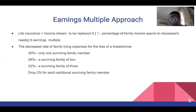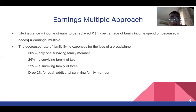The data shows: for loss of the breadwinner, 30% is for only one surviving family member, 26% is for a surviving family of two, 22% is for a surviving family of three, and it continues to drop 2% for each additional surviving family member.